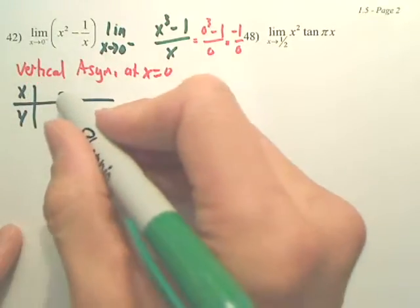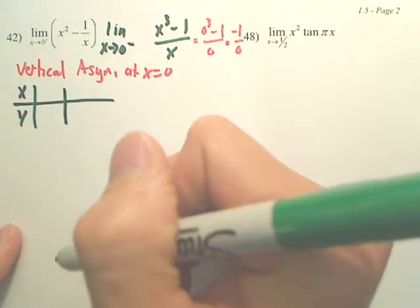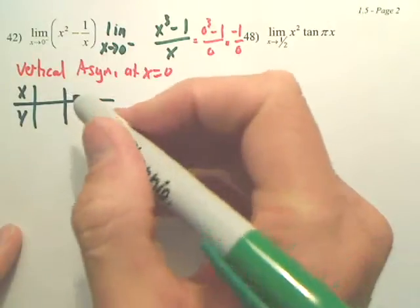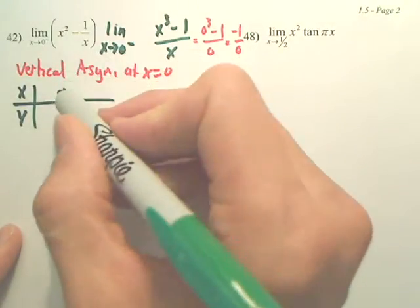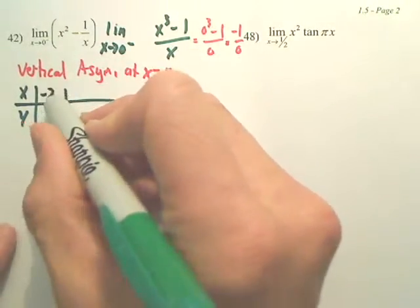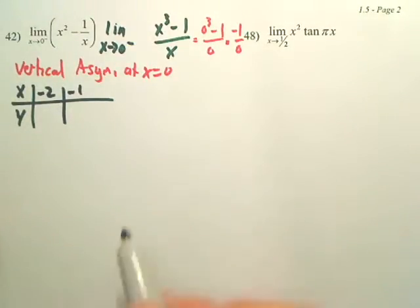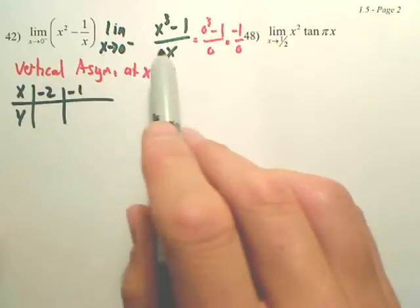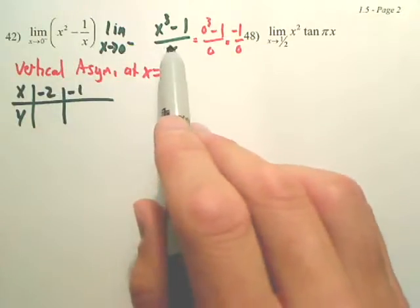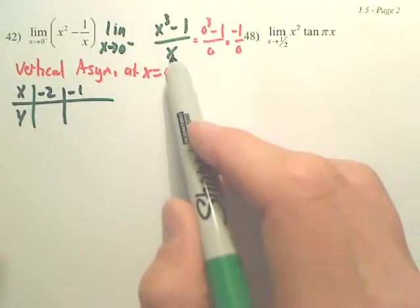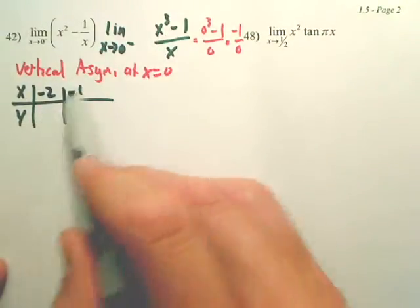We're approaching zero from the negative side. So give me two numbers that are approaching from the negative side. I'm going to do it from negative two and negative one because I'm approaching from right to left. Now, again, it doesn't matter which equation you used. I'm just using this one. When I plug in negative two,